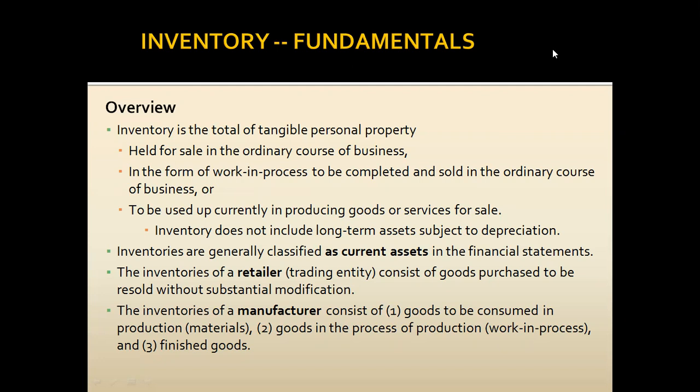Inventory can be in different forms. If it's a trading business, it will be only finished goods inventory. But if it's a manufacturing business, we will have three kinds of inventory: raw material, work in process, and finished goods inventory. So business to business it can vary.